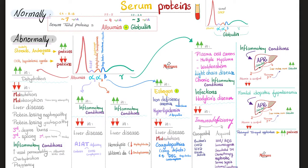Abnormally, let's talk about causes of hyperproteinemia — too much protein — or hypoproteinemia — too little. Anabolic steroids, androgens, and other hormones might boost proteins. Conversely, oral contraceptive pills and anything toxic to the liver will decrease proteins, because the liver is the factory that makes your plasma proteins.